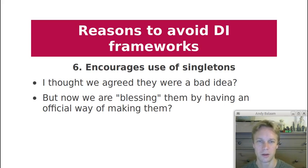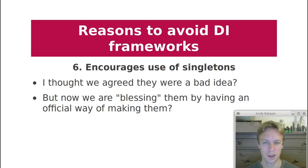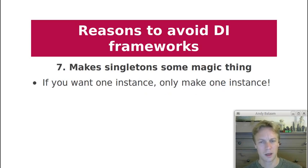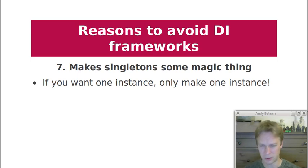Another reason: DI frameworks encourage you to use singletons as a concept, and I think we'd agree that singletons are a bad idea. There are some coding patterns that give you singletons — which by the way are global variables — but by giving us mechanisms for explicitly labeling things as singletons and blessing that concept, we're endorsing global variables. Further, if you must have only one instance of a class, why not just make that instance in your main method and pass it around? Then there'll only be one instance of it. What's magic about a singleton that means you need special code for it?